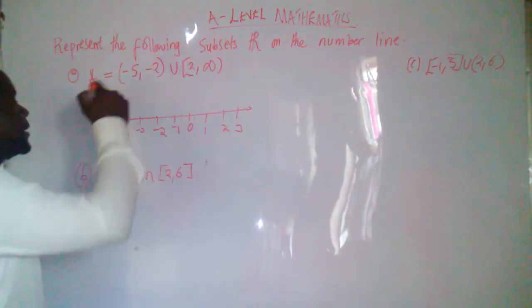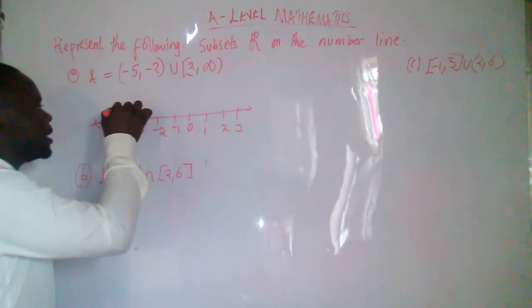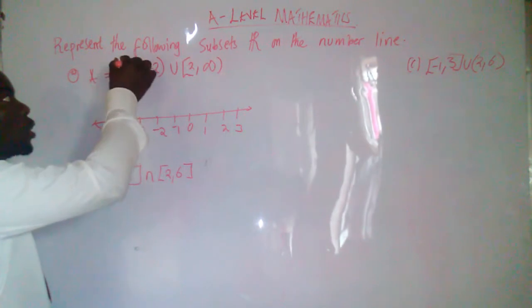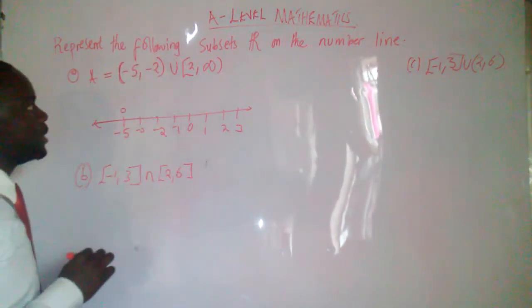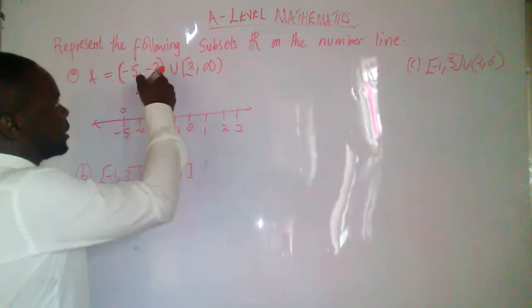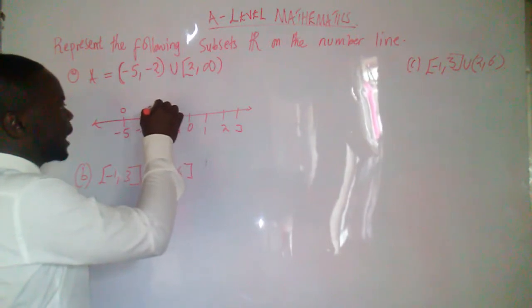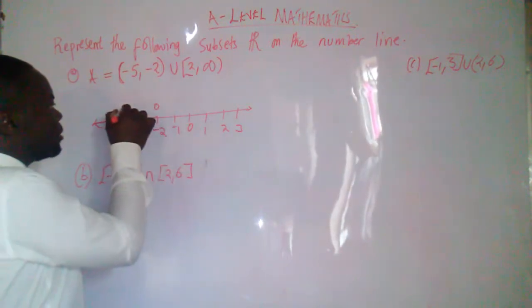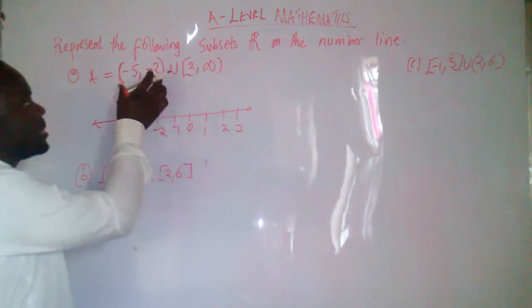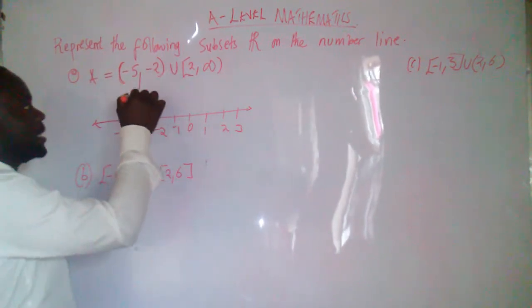So remember that negative 5 is this point here. It's the open interval because of this kind of bracket. And then with negative 2, with an open interval of negative 2. So this is this part here, this part here.